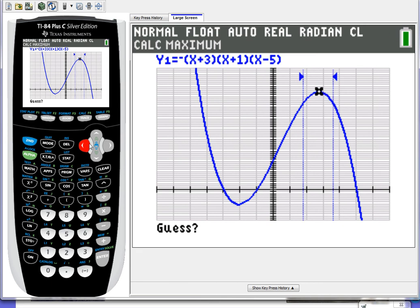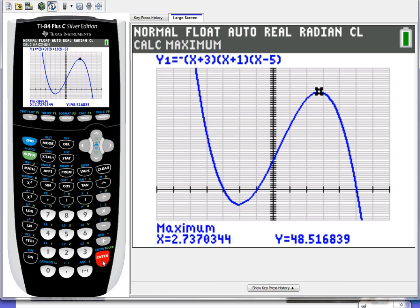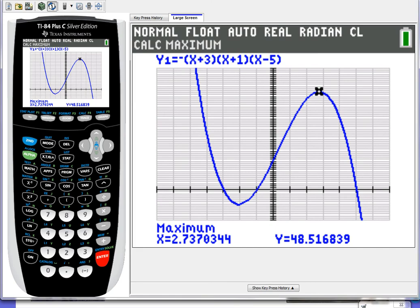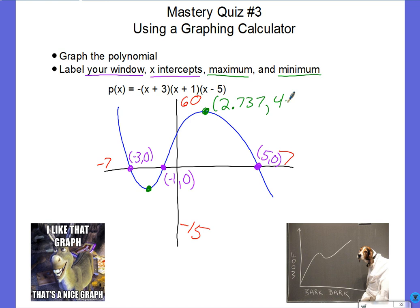And then it says guess. If you want to, you can move your little spider guy over there to about where it is. Or you can just hit enter. It doesn't really matter. And here's my maximum. 2.3737 and 48.516. So I'm going to write that as a coordinate. 2.737. Note three decimal places, please. And 48.516.